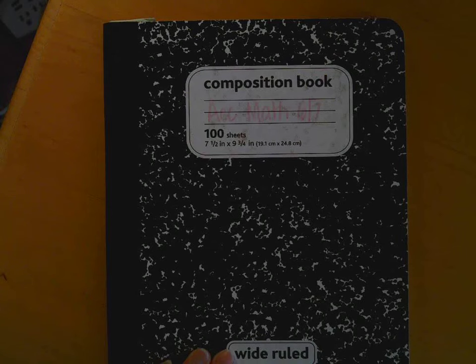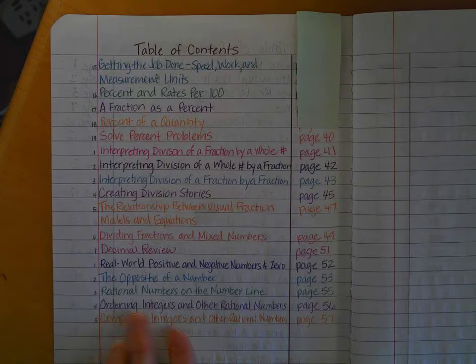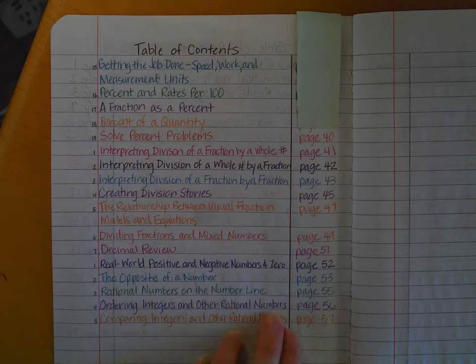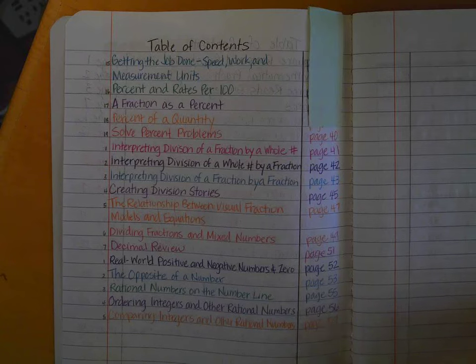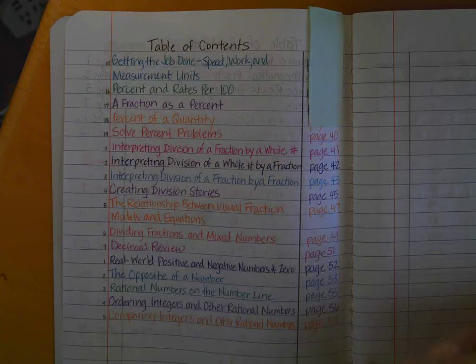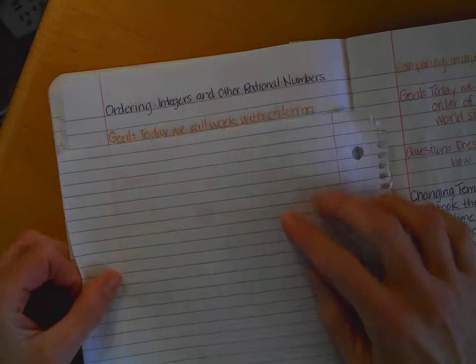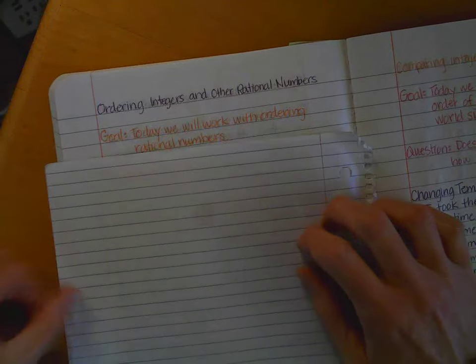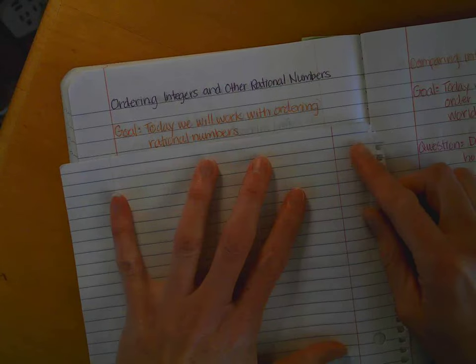Hello, Accelerated Math 6-7 students. We are working in Module 3, starting Lesson 4. Module 3, Lesson 4 is called Ordering Integers and Other Rational Numbers, and that can be found on page 56 in my comp book. Our goal for today is, today we will work with ordering rational numbers, ordering, putting them in order.